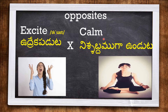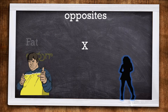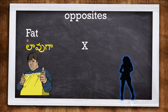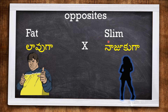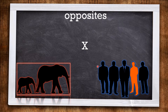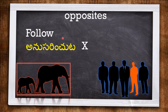This lady is calm in her meditation. The next word is FAT — this man is looking very fat. The opposite of fat is SLIM. This lady is slim.